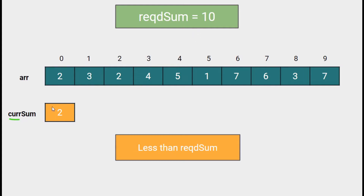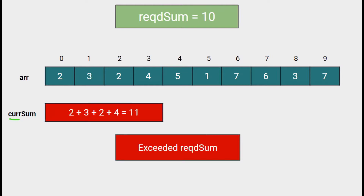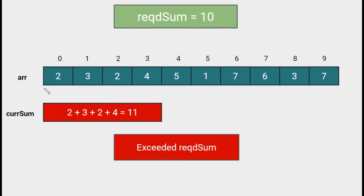At first it is 2, so we add one more number and check — it is 5, still less than 10. So we add one more number; it is 7 now. Since it is less than 10, we add one more number to check. Now the sum is exceeding the required sum. We have considered the first 4 numbers to be present in our subarray, but the sum is now exceeding.